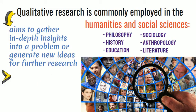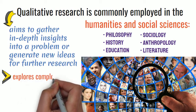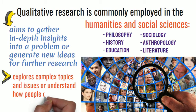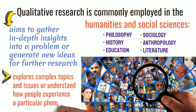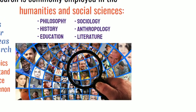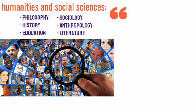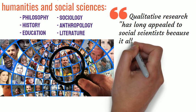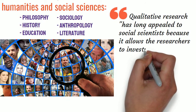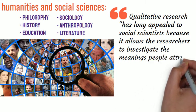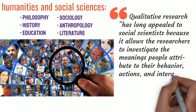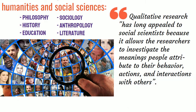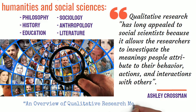This type of research is also used to explore complex topics and issues, or to understand how people experience a particular phenomenon. According to Ashley Crossman, qualitative research has long appealed to social scientists because it allows researchers to investigate the meanings people attribute to their behavior, actions, and interactions with others. See Ashley Crossman, An Overview of Qualitative Research Methods, ThoughtCo.